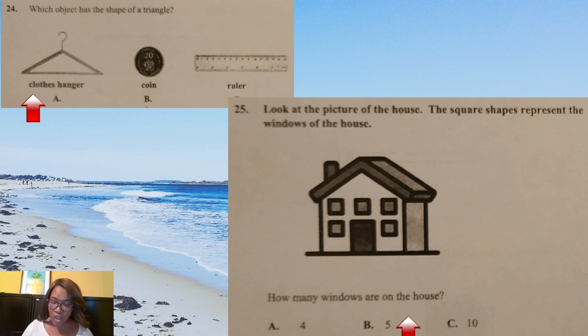Question 25: Which object has the shape of a triangle? So we know that a triangle has three sides. So the child should remember that. Tri, triangle. Three sides. And pick up that clothes hanger. Option A is the answer. Question 25: Look at the picture of the house. The square shapes represent the windows of the house. So the child should count 1, 2, 3, 4, 5. Five windows, option B. But if they contain the rectangle, which represents the door, then you can pick up that they have some confusion between squares and rectangles. And you need to either reteach or reinforce that.